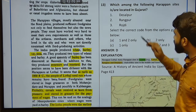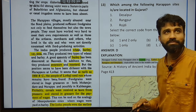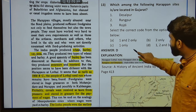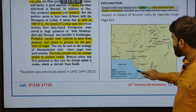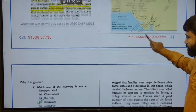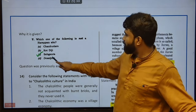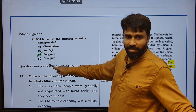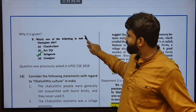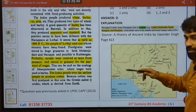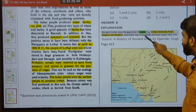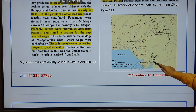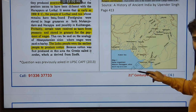Which among the following Harappan sites are located in Gujarat? This is also important. Roshdi, Rangapur, Desalpur are all important because UPSC in PYQ 2019 civil service examination asked about Chandhwaro, Kodiji, Desalpur. The Harappan sites in Gujarat were Desalpur, Dholavira, Nageshwar, Rangapur, Roshdi, Lothal, Mahat — these are very important.